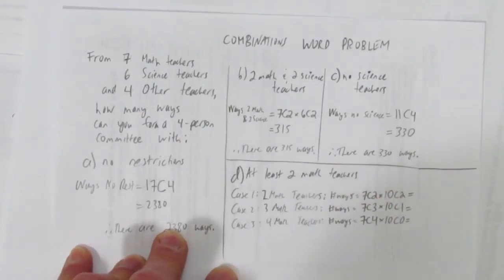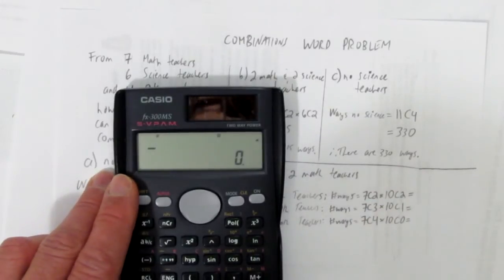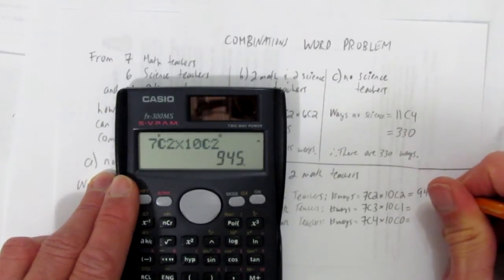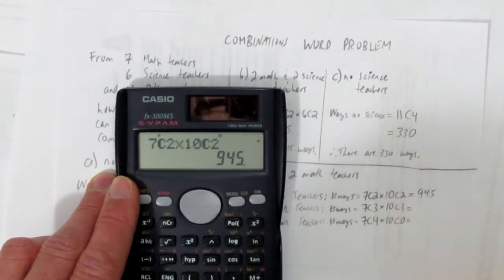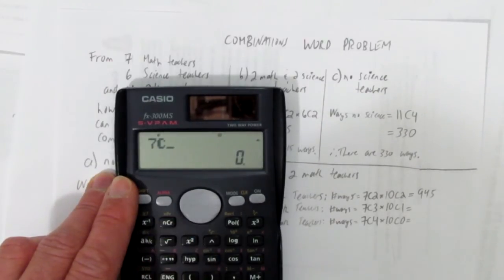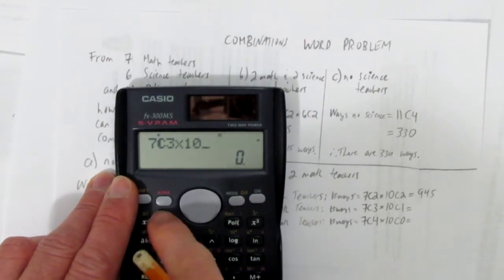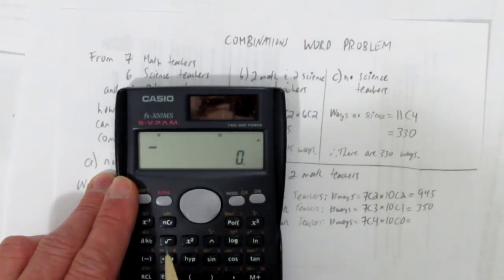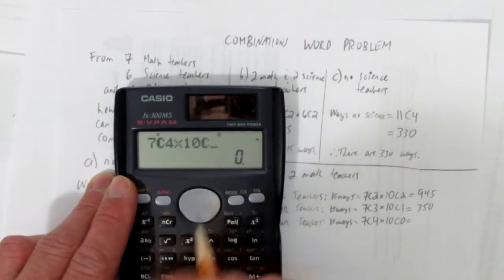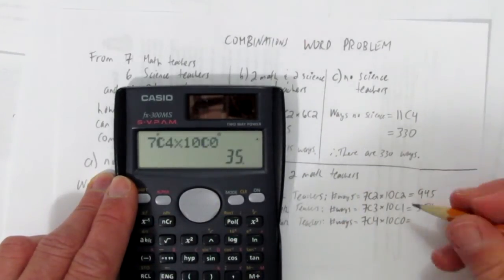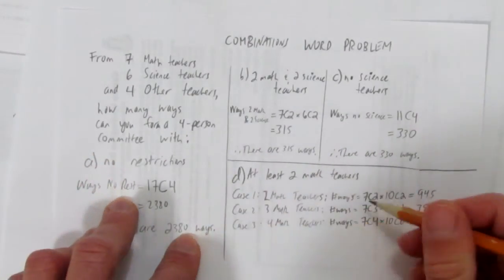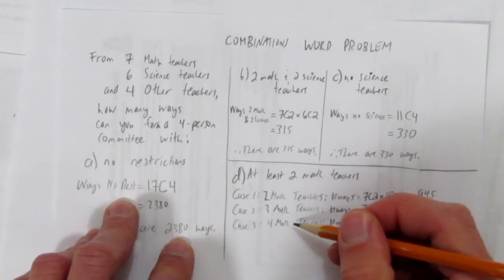Let's do those calculations. Seven choose two, times ten choose two. There's 945 ways to have two math teachers. Seven choose three, times ten choose one. Three hundred and fifty. And the last one, just seven choose four, or seven choose four times ten choose zero, but it wasn't necessary. Either way, you get 35. So those are your possibilities. Two math teachers, three math teachers, four math teachers.